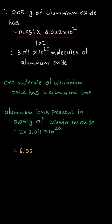Therefore, the number of aluminium ions present in 0.051 grams of aluminium oxide is equal to 6.022 × 10²⁰ ions. Thank you.